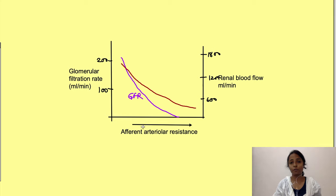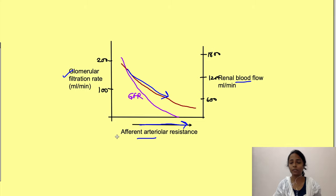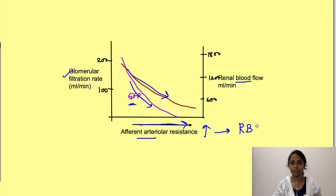Looking at the graph with afferent arteriole resistance on the x-axis and both GFR and renal blood flow on the y-axis: as afferent arteriole resistance increases, renal blood flow decreases. GFR also decreases. So increasing afferent arteriole resistance decreases renal blood flow, which leads to decreased glomerular capillary hydrostatic pressure and hence decreased GFR.